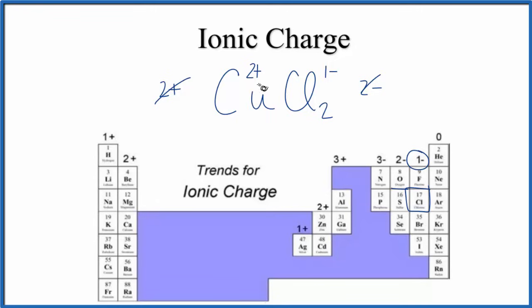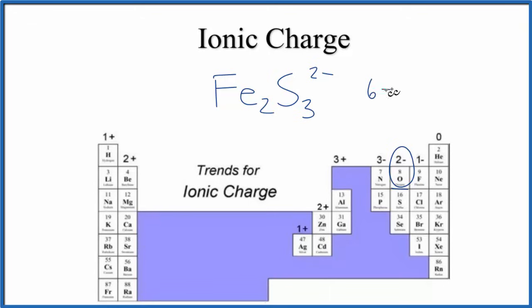Pause and try this one. For Fe2S3, it's pretty much the same as Fe2O3 because these are in the same group. Overall neutral compound, so we look up sulfur, which is 2-. 3 times 2- gives us 6-, so this has to be 6+. 2 times 3+ will give us 6+, net charge is 0. This is iron(III) sulfide.